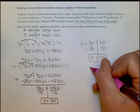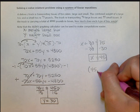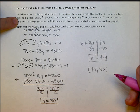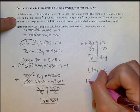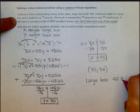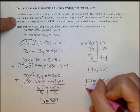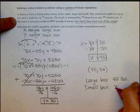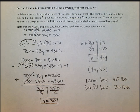So the solution to this system as an ordered pair is 45 comma 30. Or in terms of the story problem, a large box weighs 45 pounds, and a small box weighs 30 pounds. And that's it.